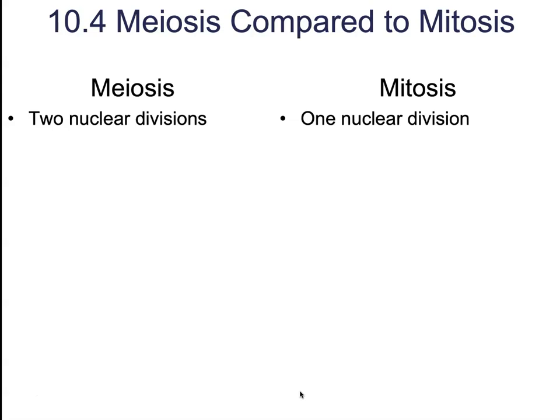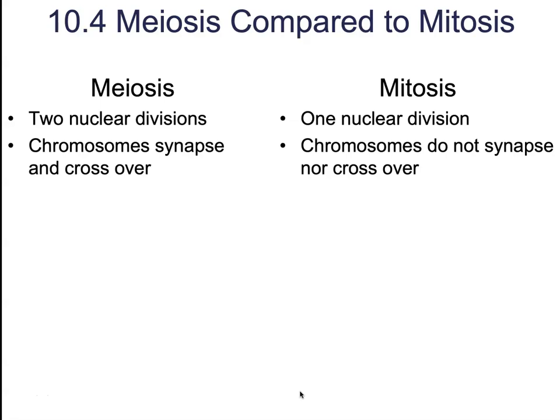Starting off with meiosis: meiosis is going to have two nuclear divisions, whereas mitosis only has one. In meiosis, we are going to see genetic variation during chromosome synapsing and those crossing over events — something that does not occur in mitosis.